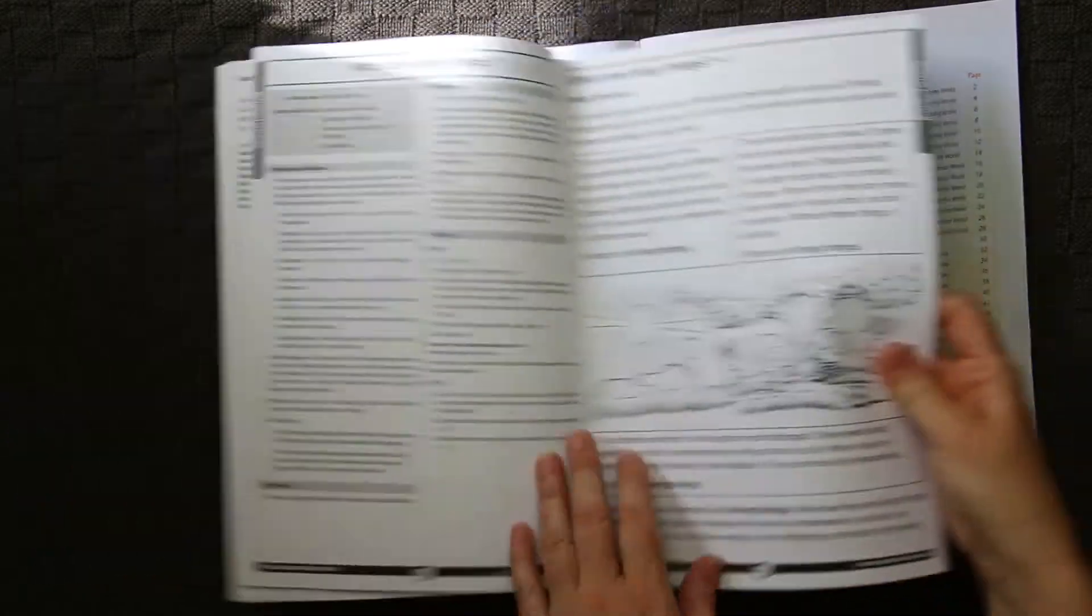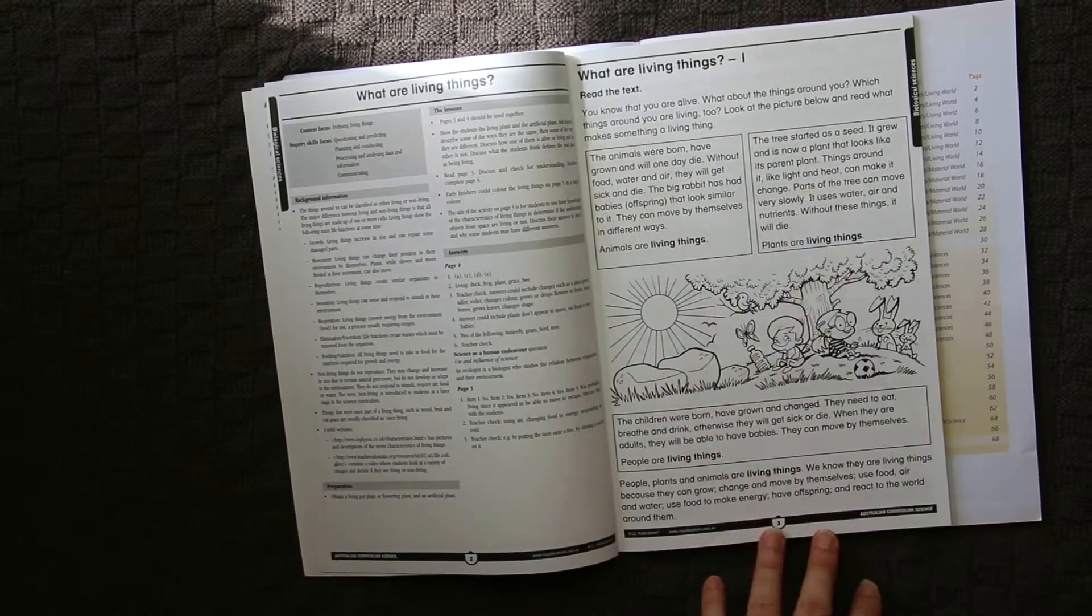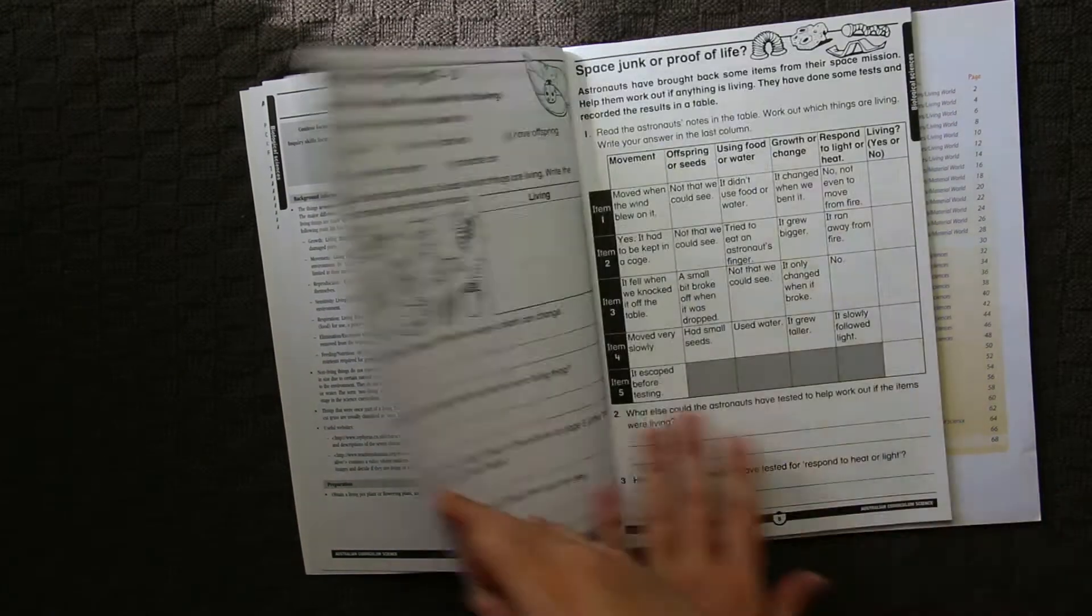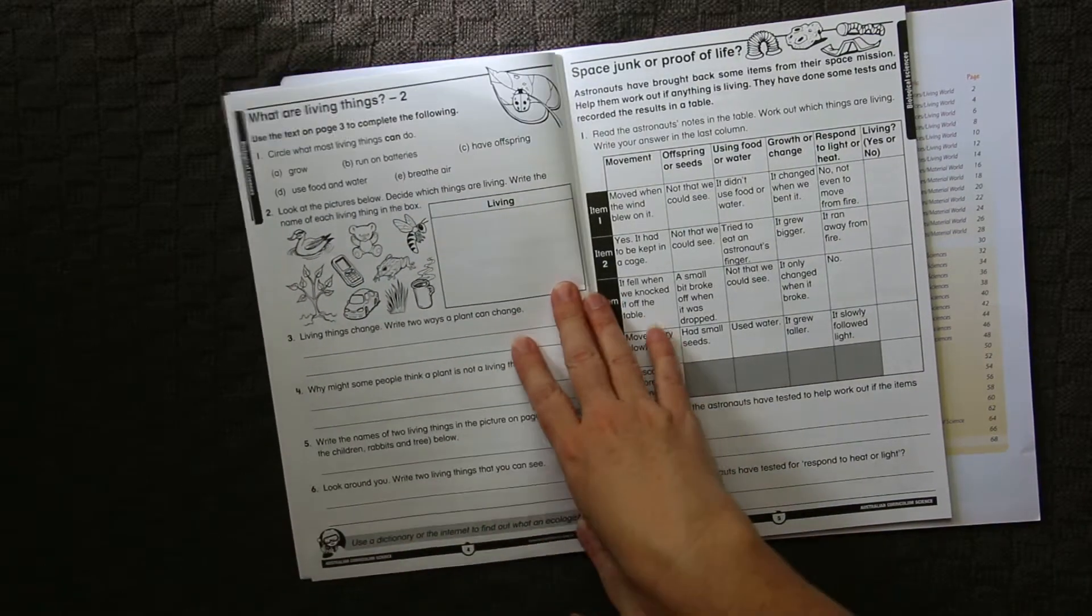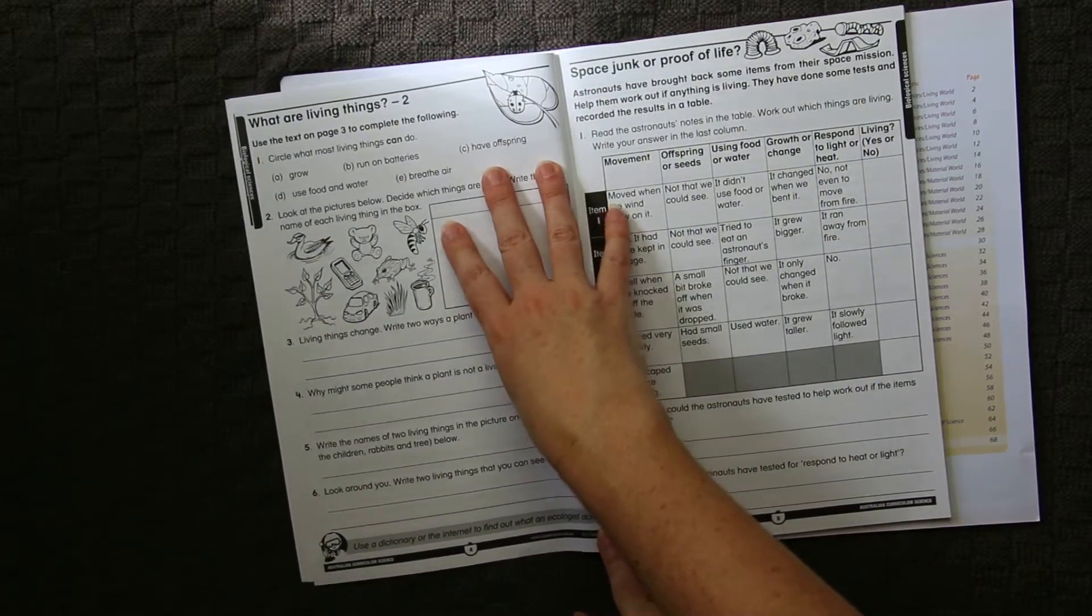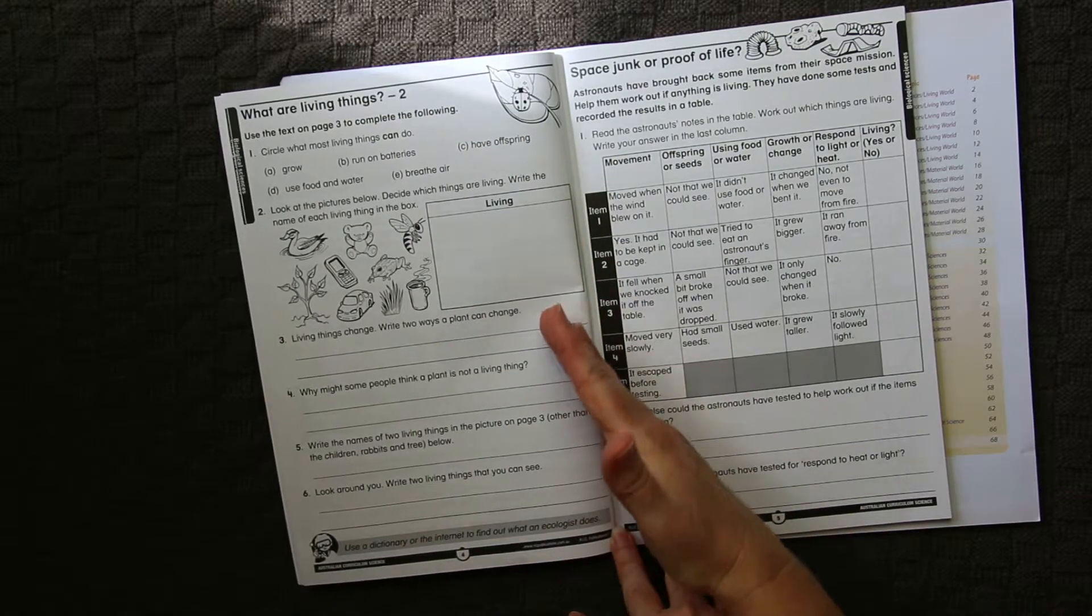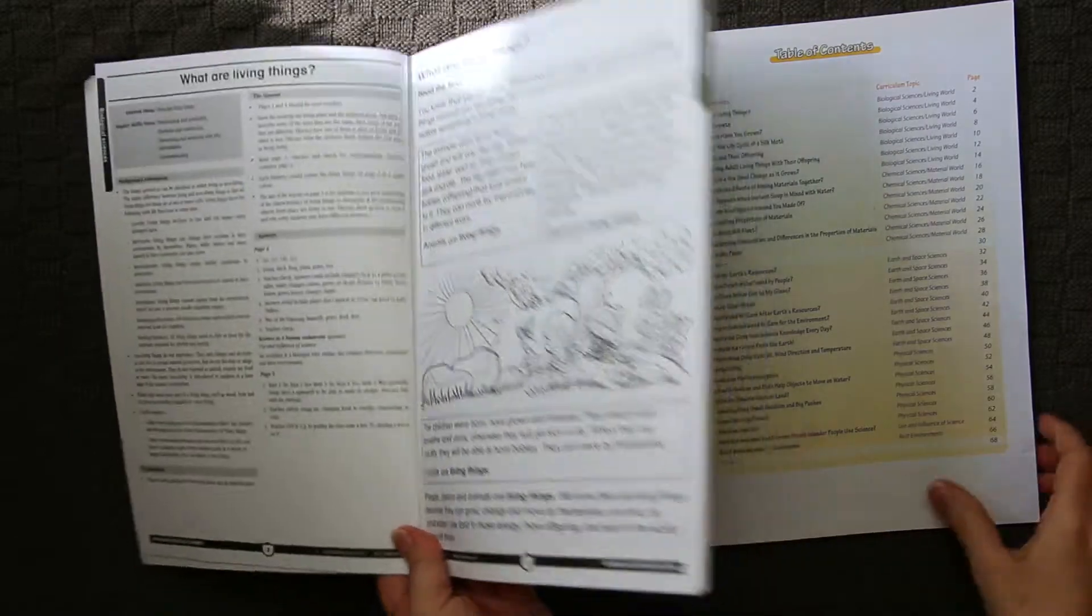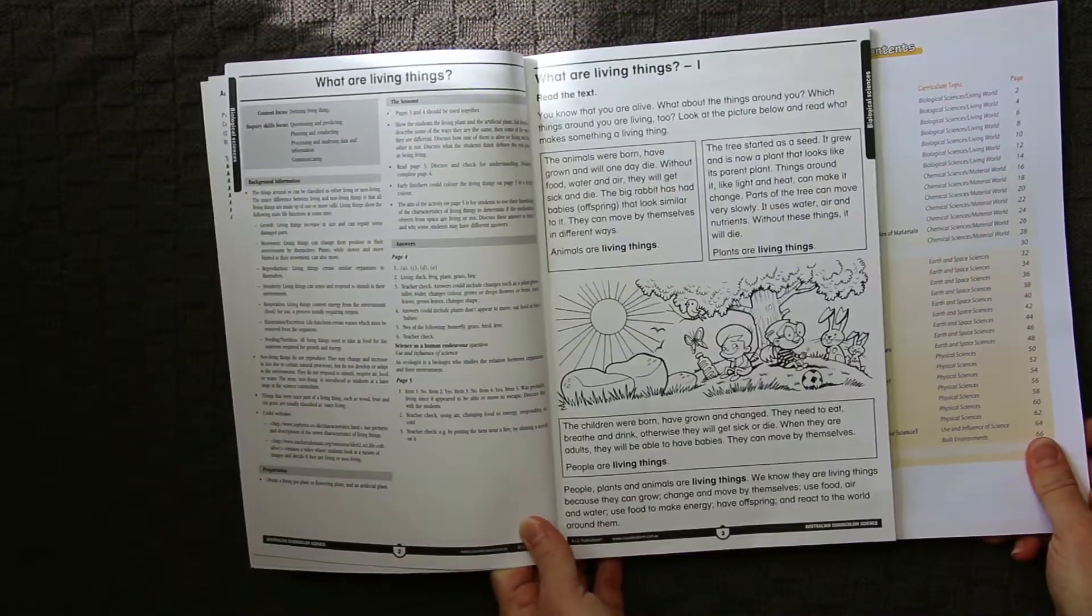In this one, it tells us to read the text. It has a brief bit of information, some coloring if the student wants to color, and it has a second follow-up page to the 'what are living things' with a few little activities that the child can do. So those are the similarities and differences between two lessons.